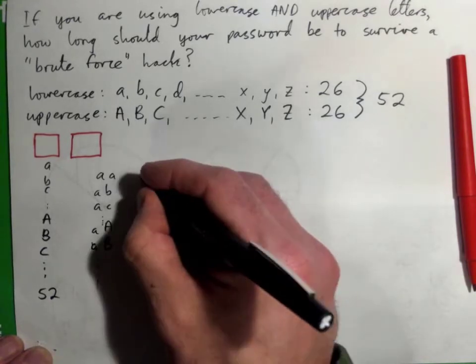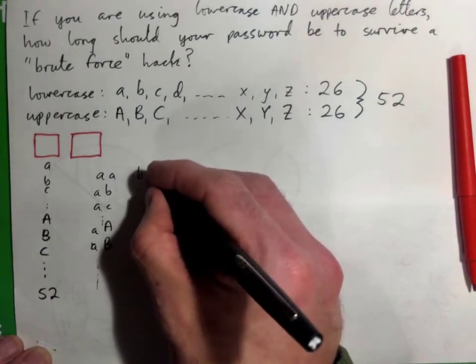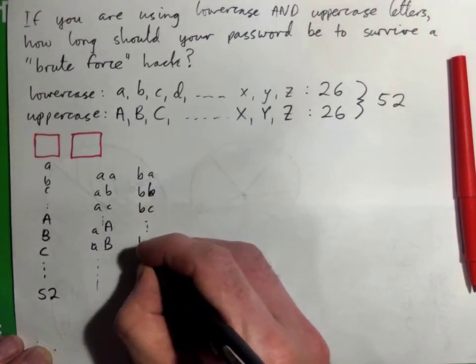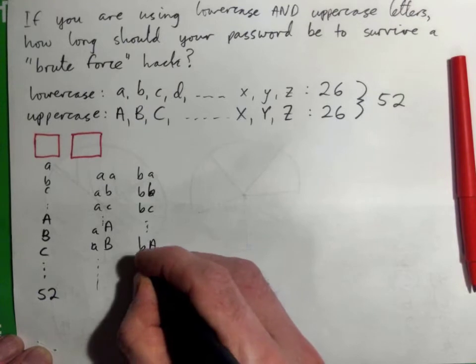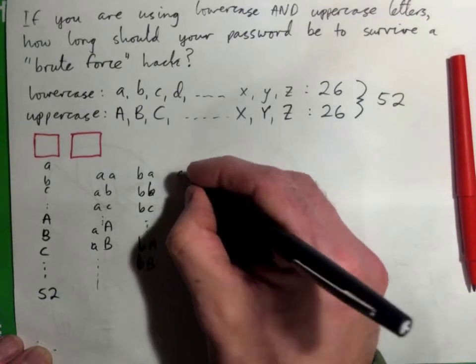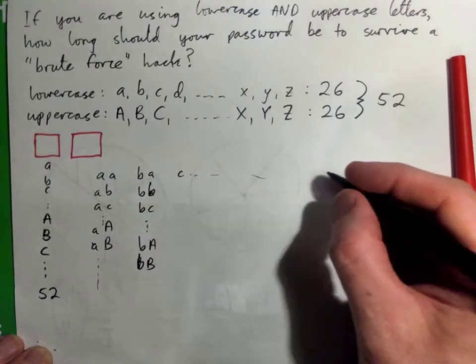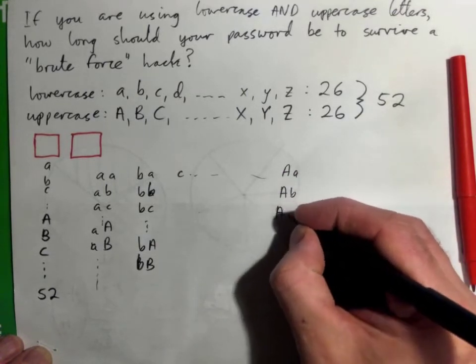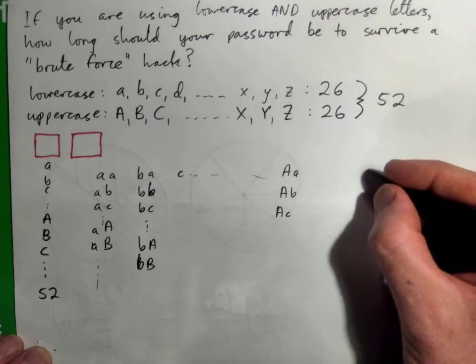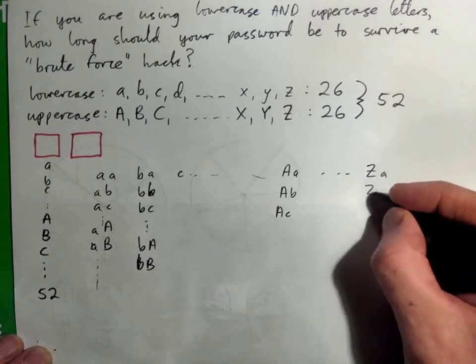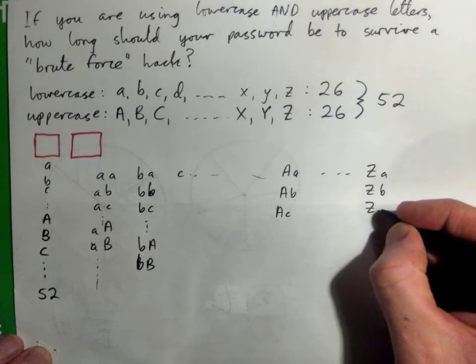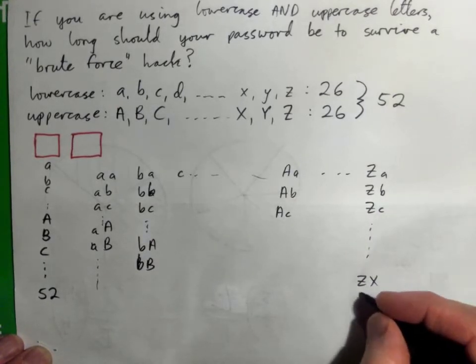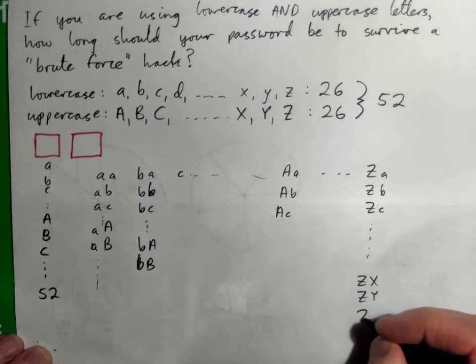Or you could start with a lowercase B and do all of the possible combinations with the lowercase B at the beginning, BA, BB, and so on, or you could start with a lowercase C, on and on and on. Or you start with an uppercase A, and then A, and then B, and then C. See how there's a lot of combinations where I start with an uppercase Z, ZA, ZB, ZC, and so on, all the way to ZX, ZY, ZZ.